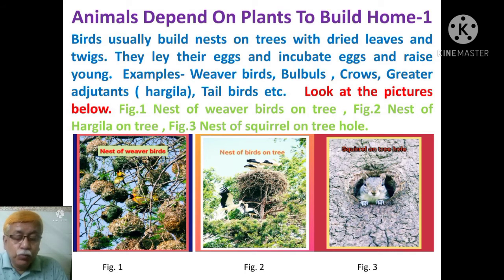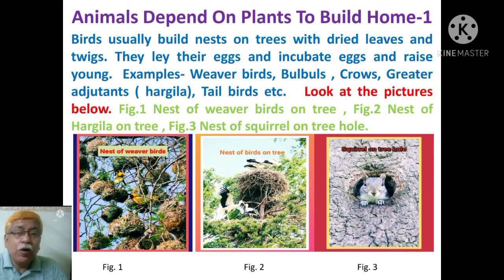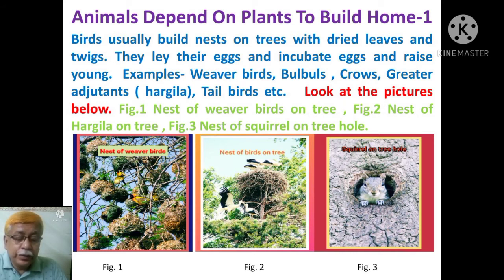Examples include Weaver birds, Bulbuls, Crows, Greater Adjutants — that is Hargil, called Hargil Pakhi in Bengali — and tail birds, etc. Look at the pictures below. Figure 1: nest of weaver birds on tree. Figure 2: nest of Hargilah on tree. Figure 3: nest of squirrel on tree hole.